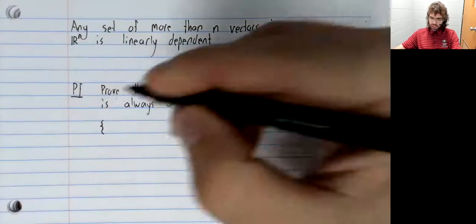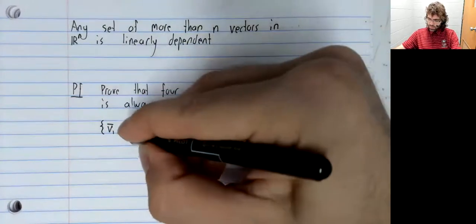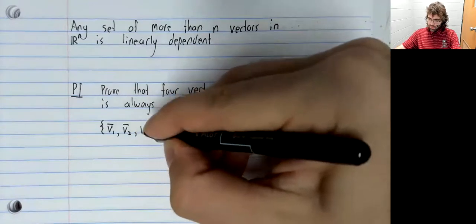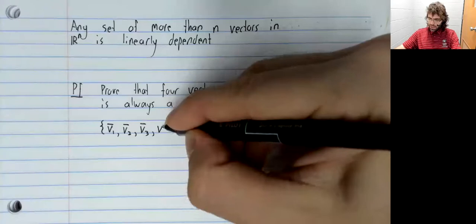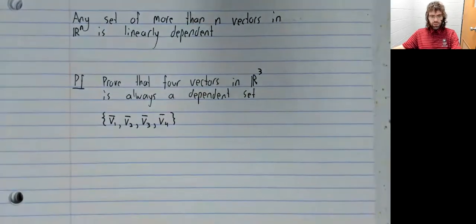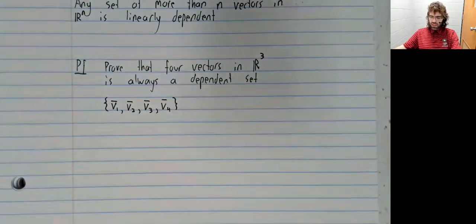So we're in R3. We have four vectors. We want to prove that this set is dependent.